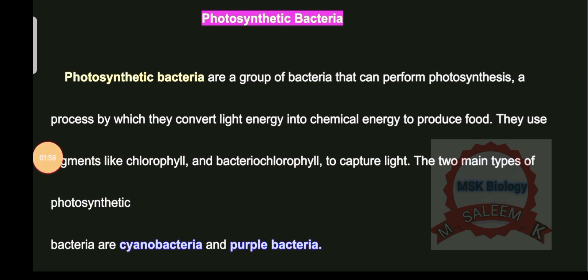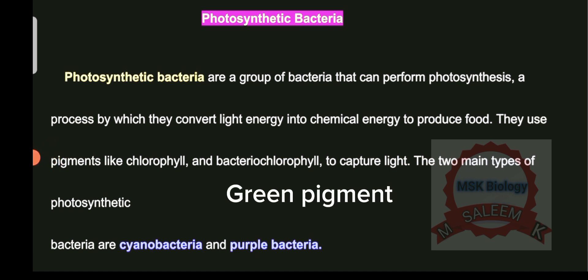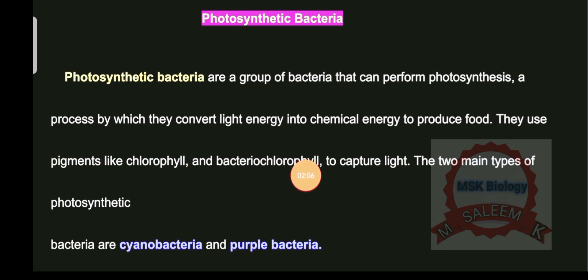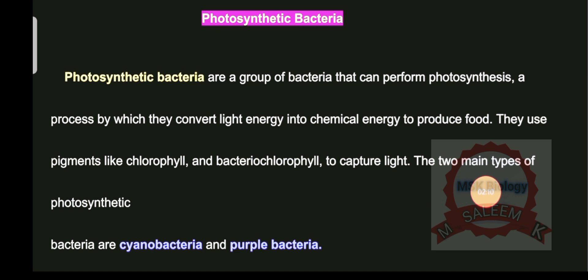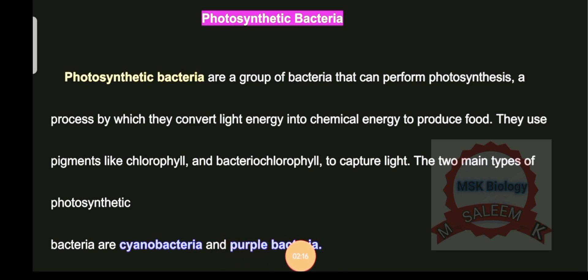Chlorophyll is the name of a green pigment used for capturing light. In bacteria, they use Bacteriochlorophyll. The two main types of photosynthetic bacteria are cyanobacteria and purple sulfur bacteria.